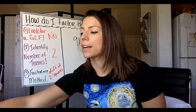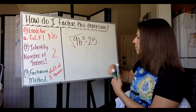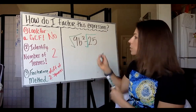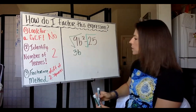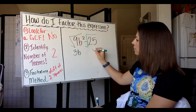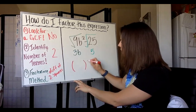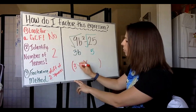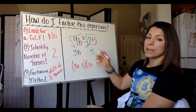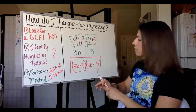Since it's a difference of two squares, the steps are quick. We take the square root of the first term and the square root of the second term. The square root of 9B squared is 3B, because 3 times 3 is 9 and B times B is B squared. The square root of 25 is 5. Our answer is a product of two binomials with 3B as the first term and 5 as the second. To get a middle term of zero, one binomial is positive and one is negative: 3B plus 5 times 3B minus 5.